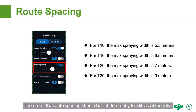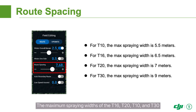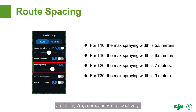Therefore, the row spacing should be set differently for different models. The maximum spraying widths of the T-16, T-20, T-10, and T-30 are 6.5 meters, 7 meters, 5.5 meters, and 9 meters, respectively.